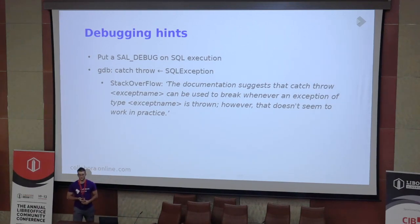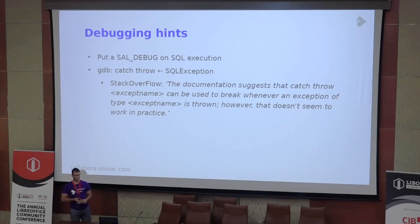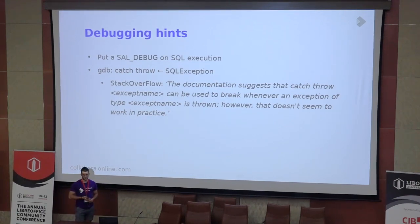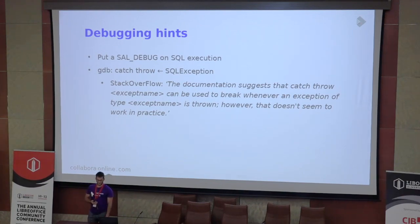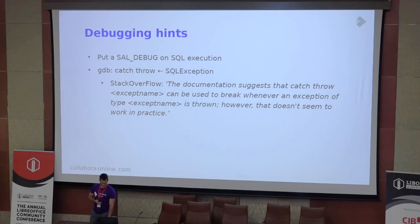Some debugging hints: when I fix something in the Base part, I start by putting a debug log on the SQL execution. There are only one or two places in each driver where an SQL statement can be executed, so logging there is quite effective. SQL can be used well in logging because of its declarative nature. Usually when there is a problem, an SQLException will be thrown, so I set up GDB with catch-throw to catch exceptions as they are thrown. I tried to configure GDB to catch only one kind of exception but couldn't figure out how — please tell me if you know.